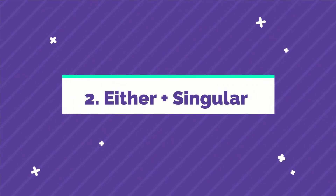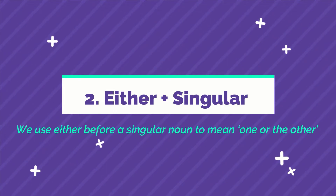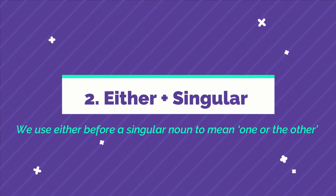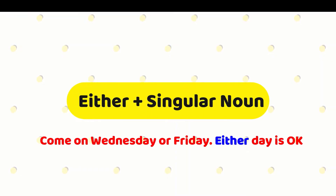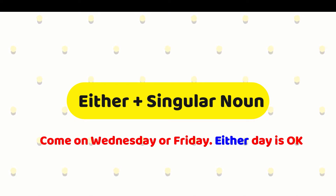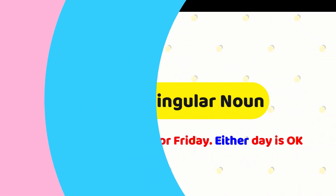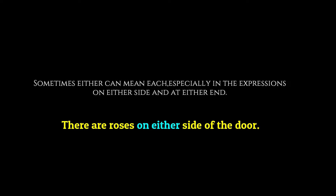Number 2: Either plus singular noun. We use 'either' before a singular noun to mean one or the other. For example: Wednesday or Friday — either day is okay. Sometimes 'either' can mean 'each', especially in the expressions 'on either side' and 'at either end'. For example: There are roses on either side of the door.